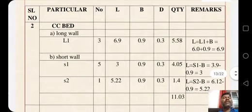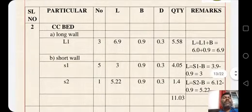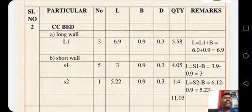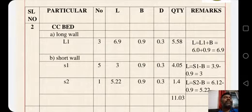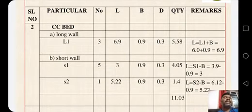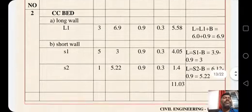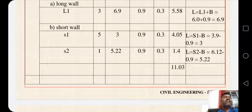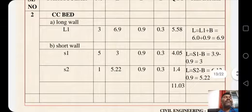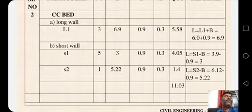Second item: CC bed. Long wall L1 — the length is same as before: 6 plus B = 6.9 meter. Width of CC bed is 0.9 meter, depth is 0.3 meter. We multiply 3 × 6.9 × 0.9 × 0.3 = 5.58. Short wall S1 — 5 numbers, length 3 meter, 0.9 × 0.3 = 4.05. S2 is 1 number: 5.22 × 0.9 × 0.3 = 1.4. Total quantity of CC bed = 11.03 cubic meters.